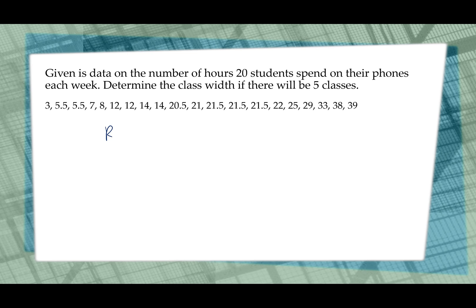So first we're going to calculate the range. To find the range we're going to take the largest value, which this data is in order, so that's 39, minus the least value 3. So 39 minus 3 is 36. Now we're going to take the range and we're going to divide it by the desired number of classes, which in this case is 5. So that would be 36 divided by 5. 36 divided by 5 would be 7.2. And what do we do? We always round up. We round up even though it's a 2. So that means that the class width in this case will be 8.